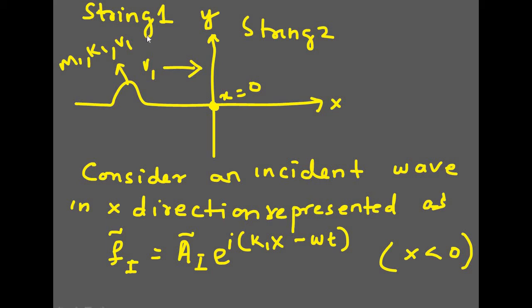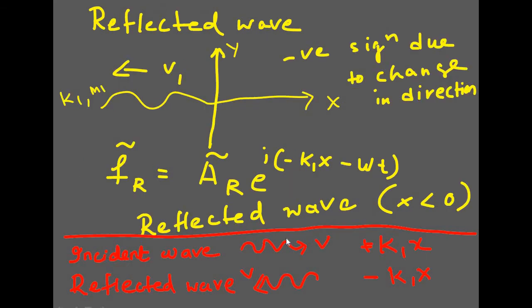String 1 will have k1 as its wave number and string 2 will have k2 as its wave number. The incident wave is described for x less than 0, the left-hand side of the string.